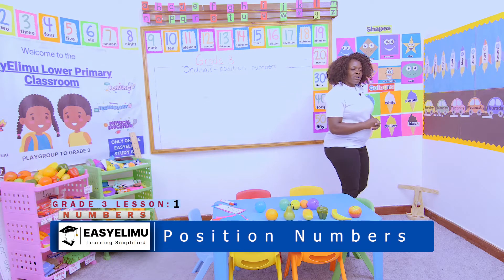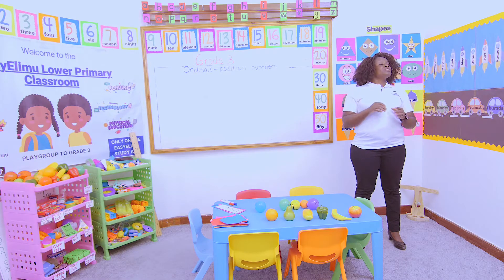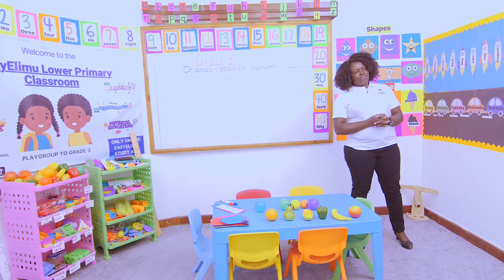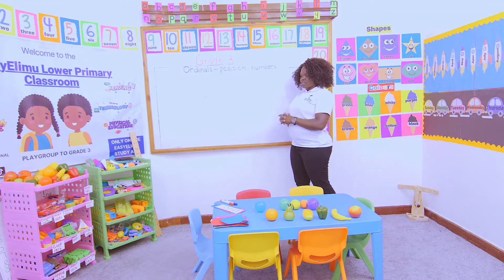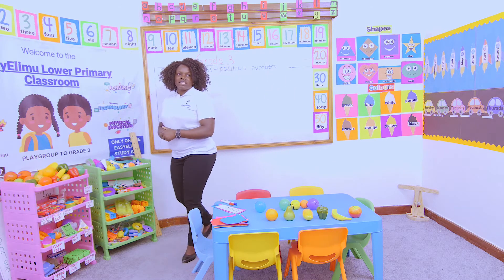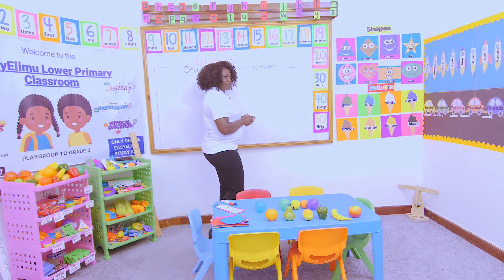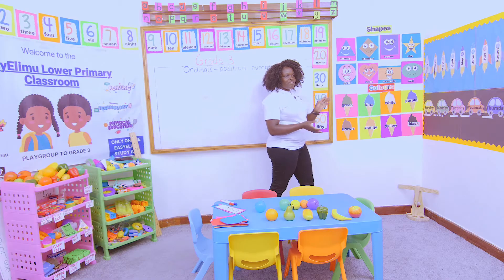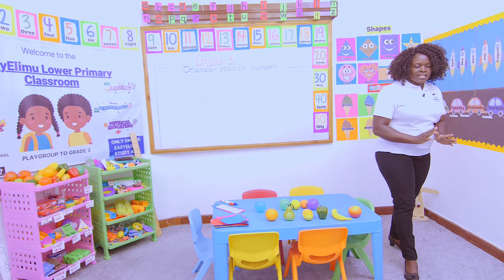Who came to class first? She was the first one — I found you writing on the board. Who followed? Johnny, teacher, I came third. No, Johnny came first. Who followed Johnny? It was Janet, then oscar.